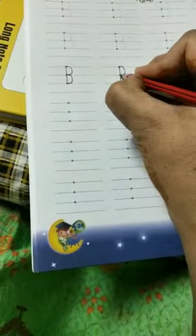You have to write letter B. One standing line. This way. You have to write letter B.